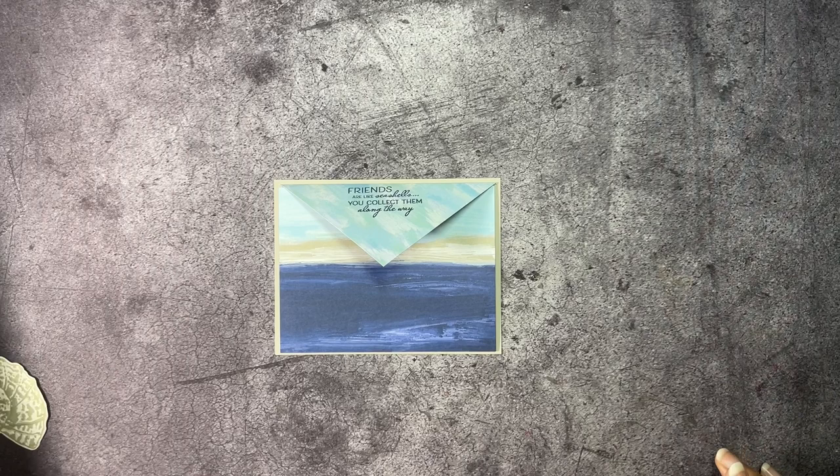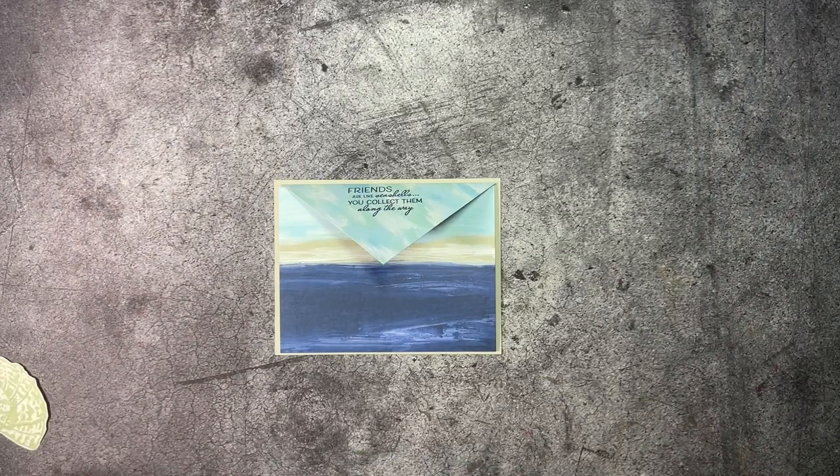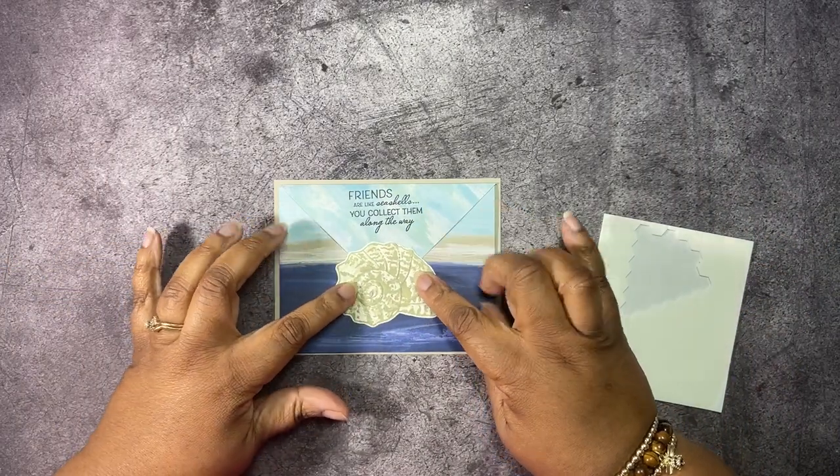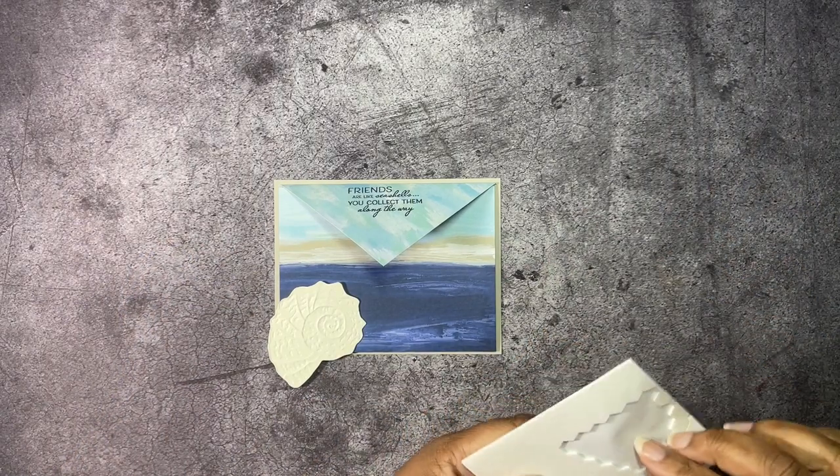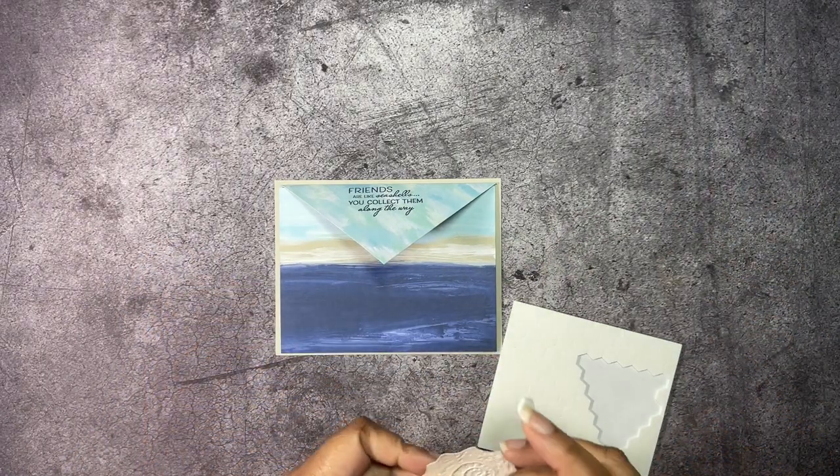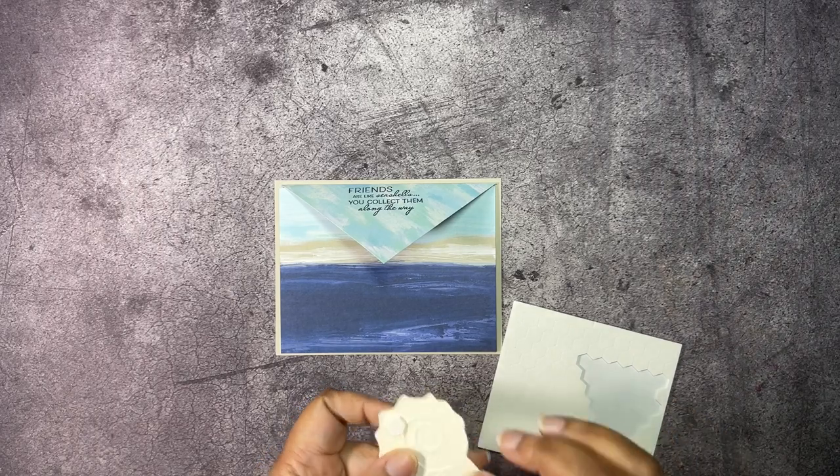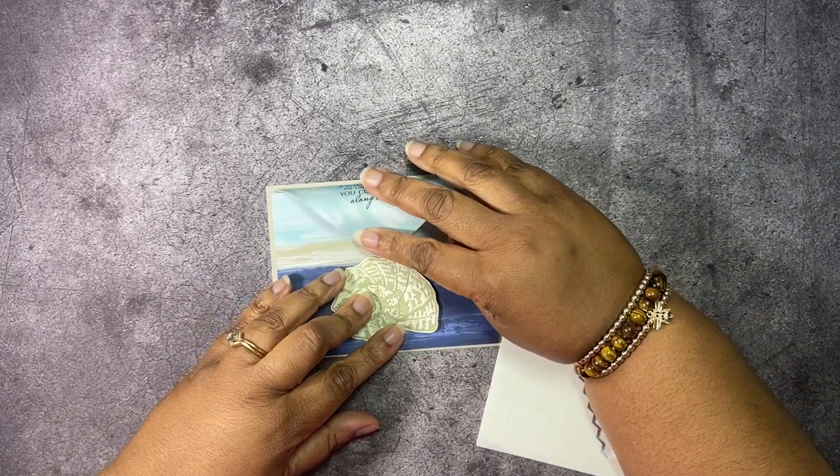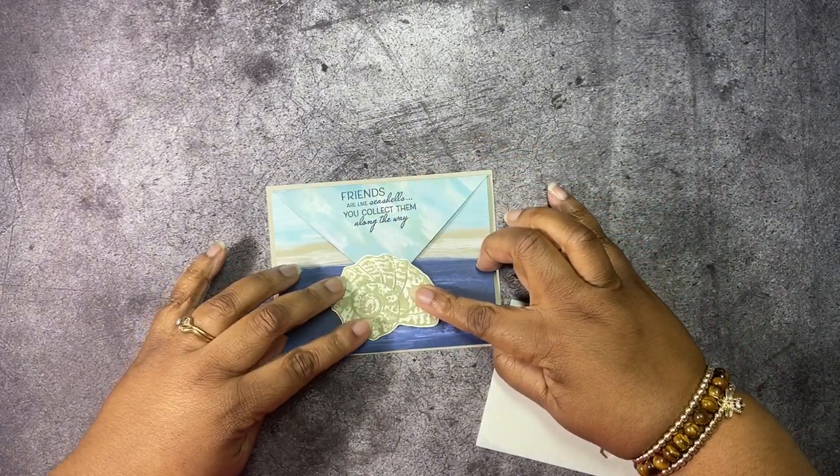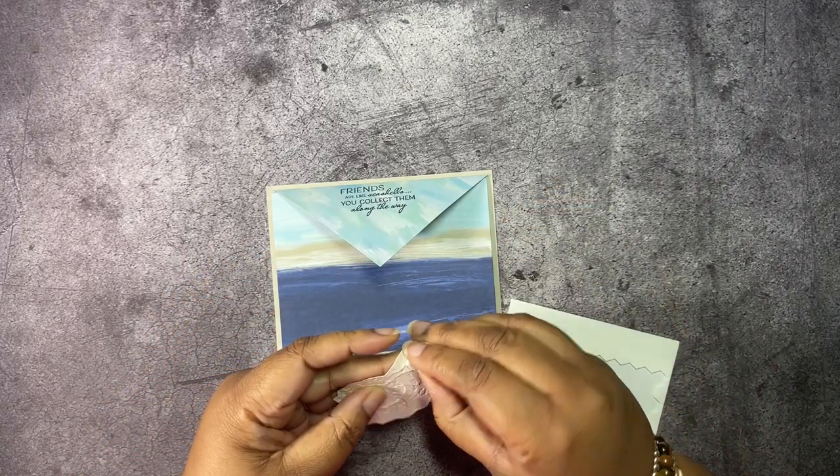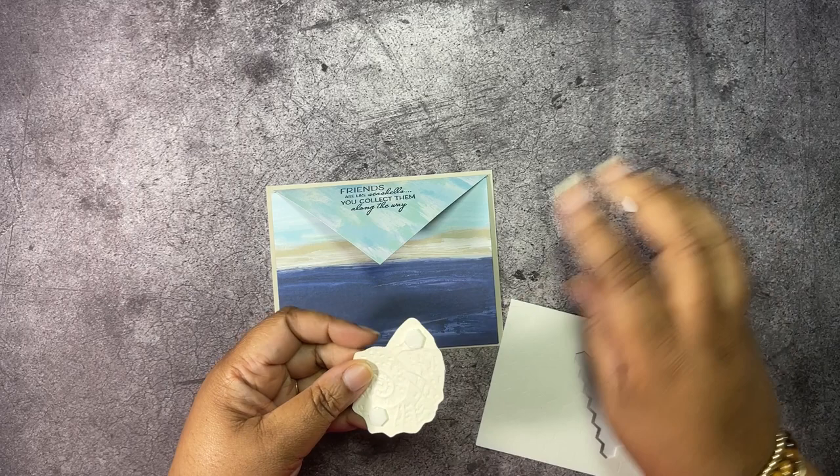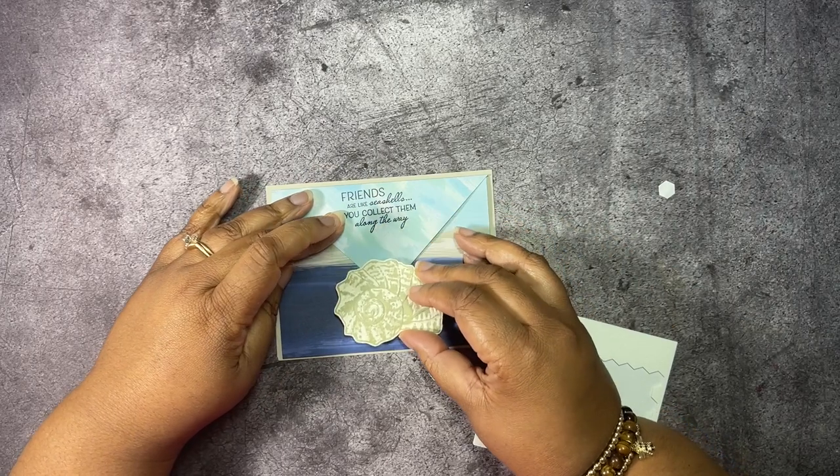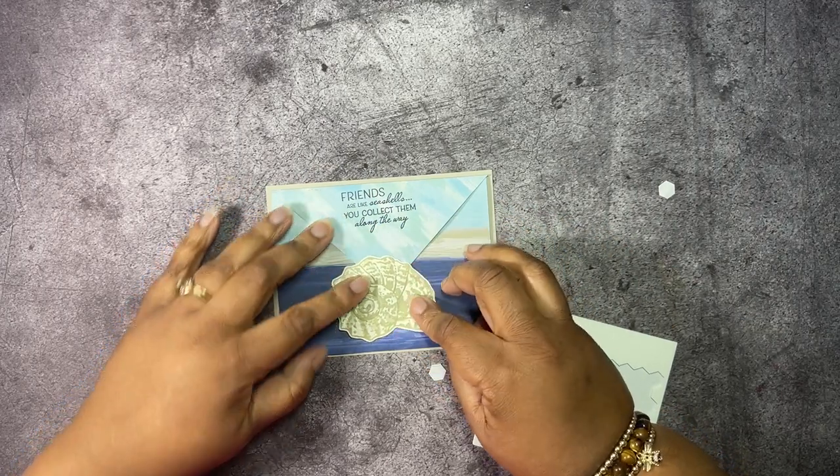Then we're going to get some stamping dimensionals because this is how we're going to keep our card closed. We're going to pop this up and that's going to be our little flap, our little envelope flap. You don't want to put dimensionals in the middle because you want your flap to be able to pop out and then you just tuck it back under. We're going to just pop that down onto the card. You don't want to put it too high because you want to make it easy to get that little flap out.